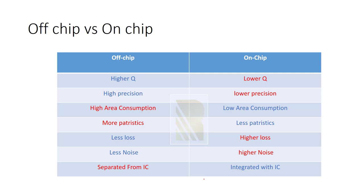Let's compare off-chip and on-chip filters. Off-chip filters have higher Q — we always want high Q because it means less noise and less loss in the filter. Off-chip filters also have high precision. However, the problems are high area consumption and more parasitics. For example, when we connect an off-chip filter to our IC receiver, with the antenna on one side, that connection introduces extra inductance and capacitance — parasitics — which is one of the main challenges of using off-chip filters.